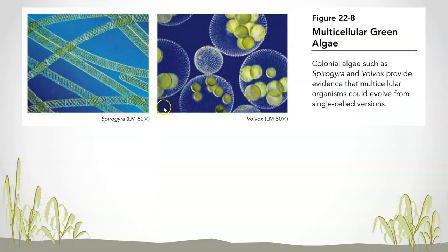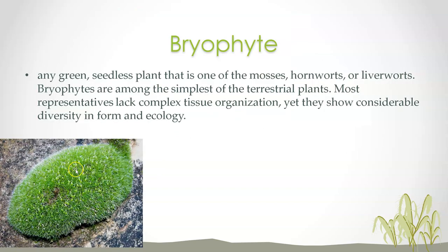You can see here two pictures from your textbook of colonial algae, and then evidence that multicellular organisms could evolve from single-celled versions. That's an example of evolution trying to explain how we got multicellular organisms from one single cell.